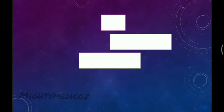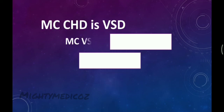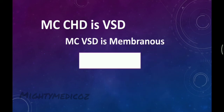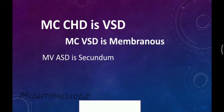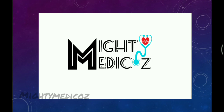To recap: the most common congenital heart disease is VSD. The most common VSD is membranous VSD, and the most common ASD is secundum ASD. The most common cause of congestive heart failure in ASD is primum ASD. This video covered the definition, types, subtypes, and Nadas Criteria for the diagnosis of congenital heart disease.